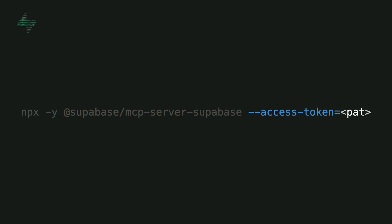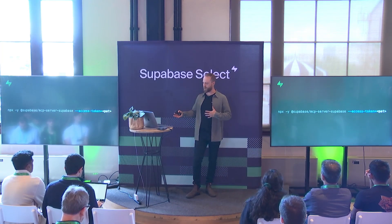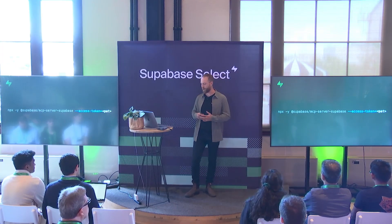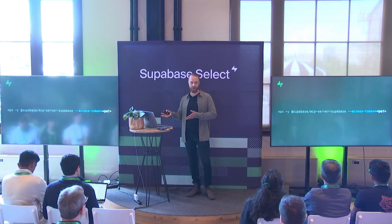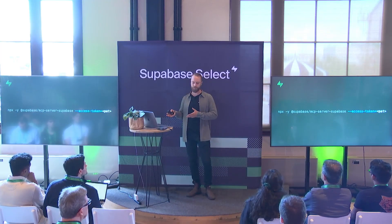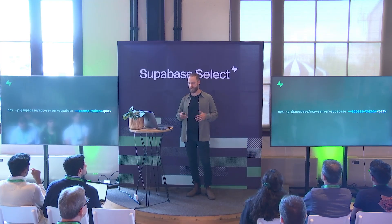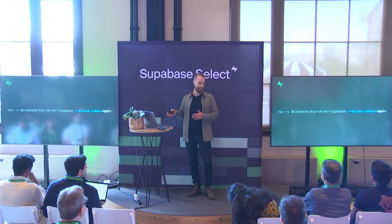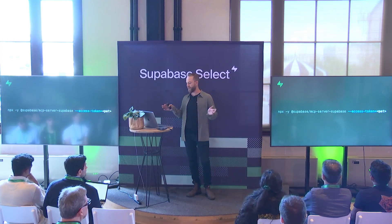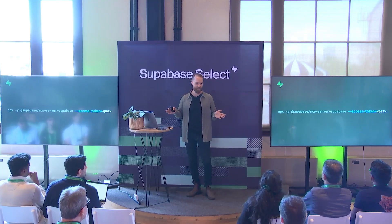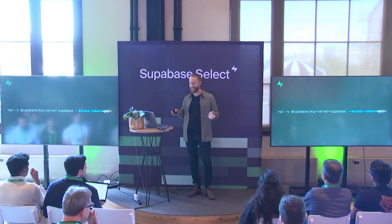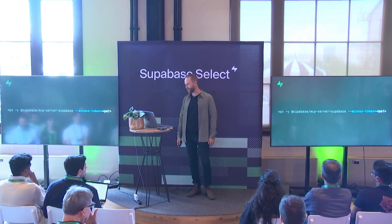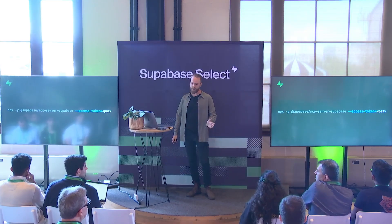Challenge number two is personal access tokens, or authentication in general. To authenticate the MCP server with your Supabase account, you'd have to go to your Supabase dashboard, go into settings, manually generate a personal access token, come back, and pop that into the CLI command argument. And on top of all that, remember to never commit this to Git — because if you do, you're going to leak your credentials. Sadly, there were some cases of this happening. So security was not as good as it could be.